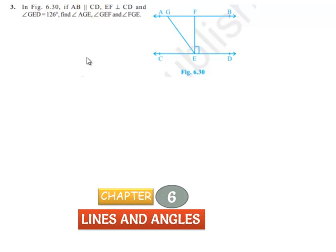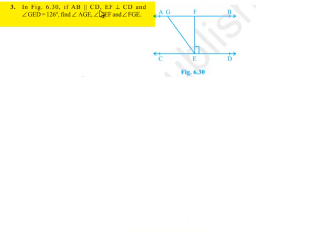Moving on to the third question, in figure 6.30, if AB is parallel to CD and EF is perpendicular to CD, and angle GED is equal to 126 degrees, find angle AGE, angle GEF, and angle FGE.